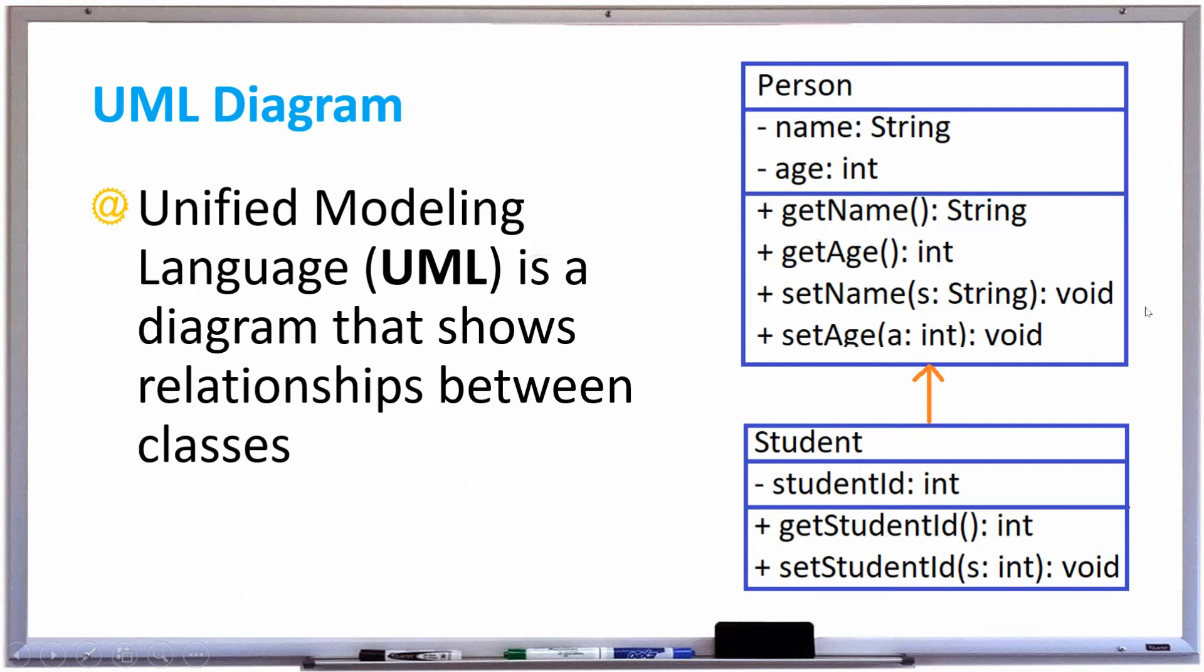In the third box, you can see that person has four methods: GetName, GetAge, SetName, and SetAge.